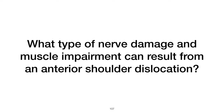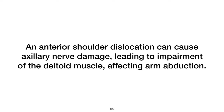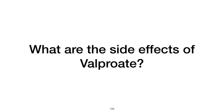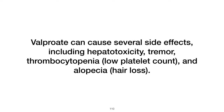What type of nerve damage and muscle impairment can result from an anterior shoulder dislocation? An anterior shoulder dislocation can cause axillary nerve damage, affecting arm abduction. What are the side effects of valproate? Valproate can cause several side effects, including hepatotoxicity, tremor, thrombocytopenia (low platelet count), and alopecia (hair loss).